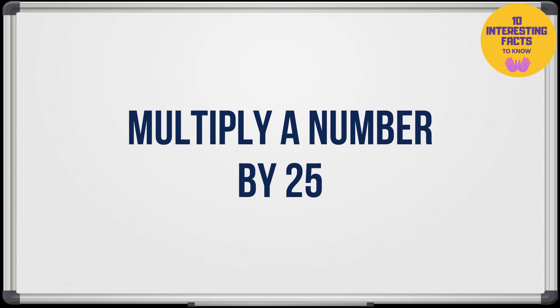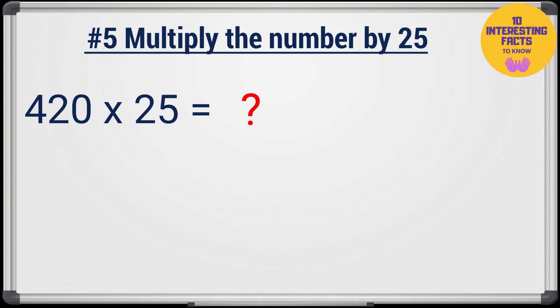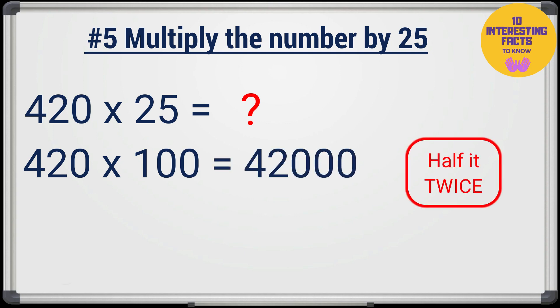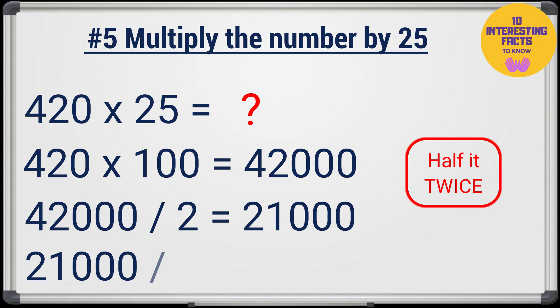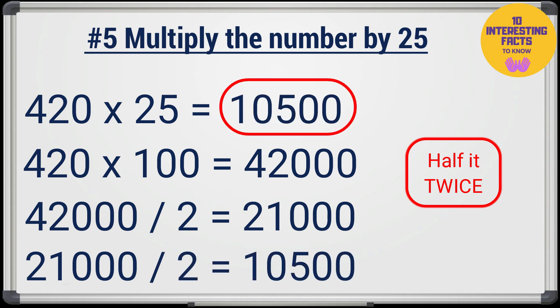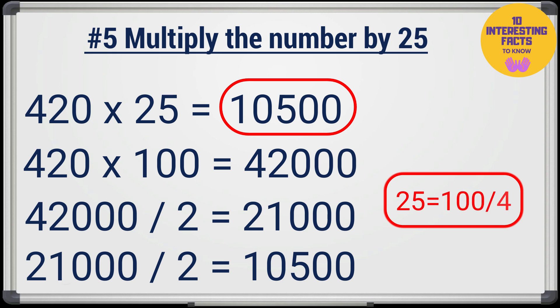Let's now see a quick way to multiply a number by 25. Let's try 420 times 25. Multiply the number by 100 which is 42,000 and then half it twice. Half of 42,000 is 21,000 and the further half of it is 10,500 and that's the answer. This works because 25 is the same as 100 divided by 4. Simple and smart, isn't it?